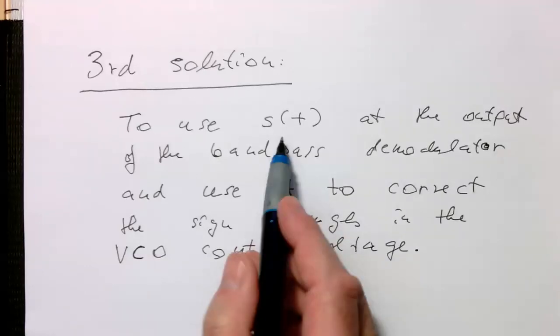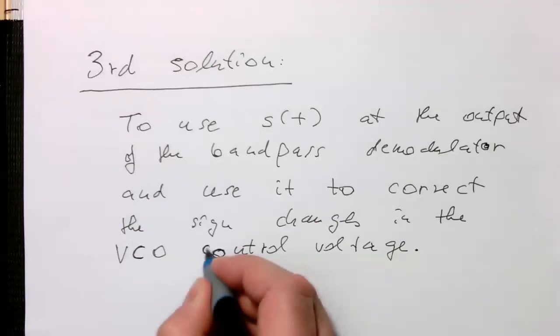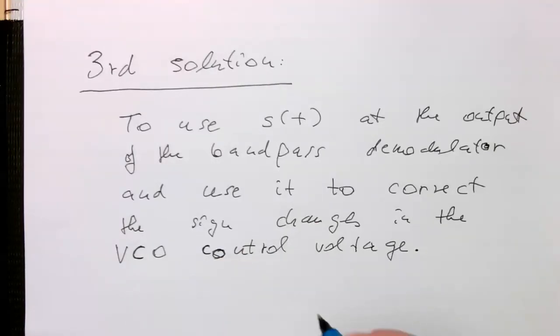This all works because the VCO is essentially a low pass filter. We use S(t) for the input phase changes, and the fact that we are decoding our symbols slightly later because of phase delays in the filters only creates slight changes in the VCO voltage, and we can tolerate that.